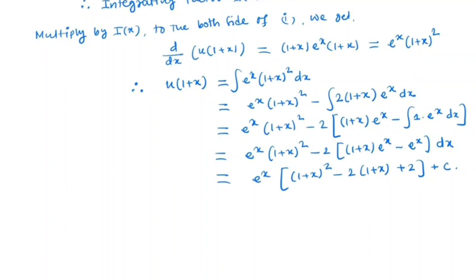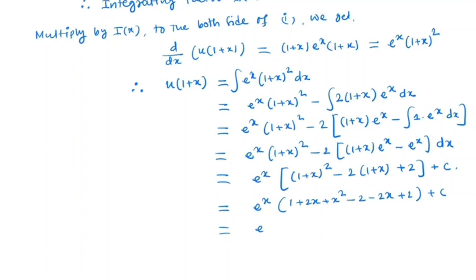So we have e^x times (1+x)^2 minus 2 times (1+x) plus 2, plus C. Simplifying: e^x times (1 + 2x + x^2 - 2 - 2x + 2) plus C. The 2x terms cancel and the constants simplify, giving e^x times (x^2 + 1) plus C.